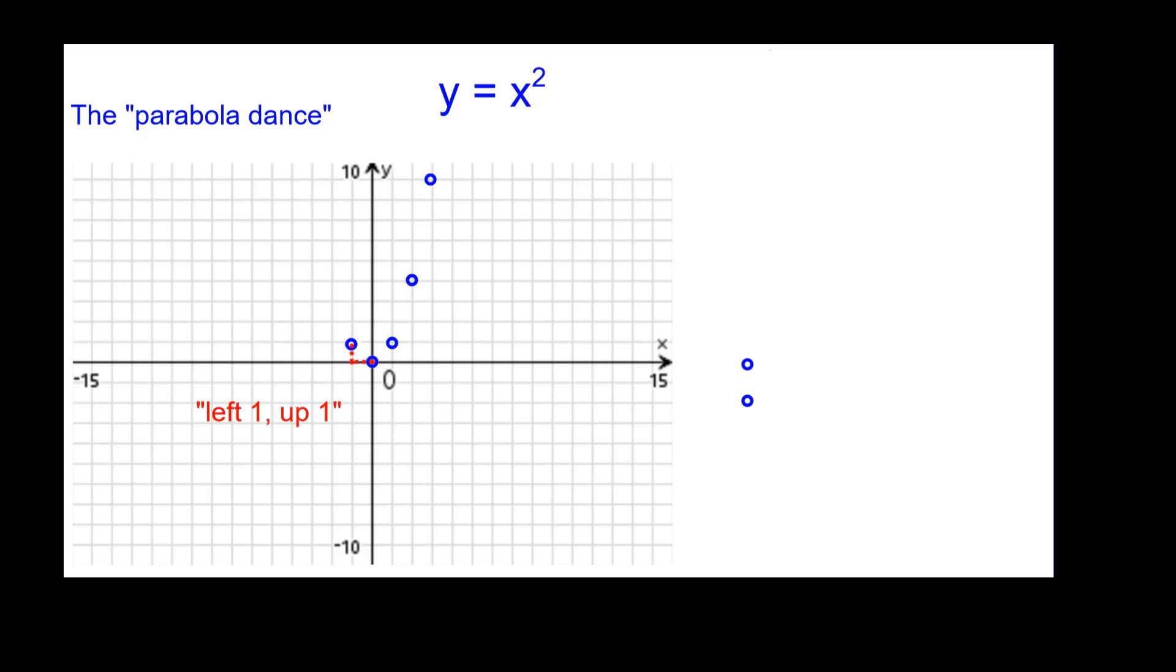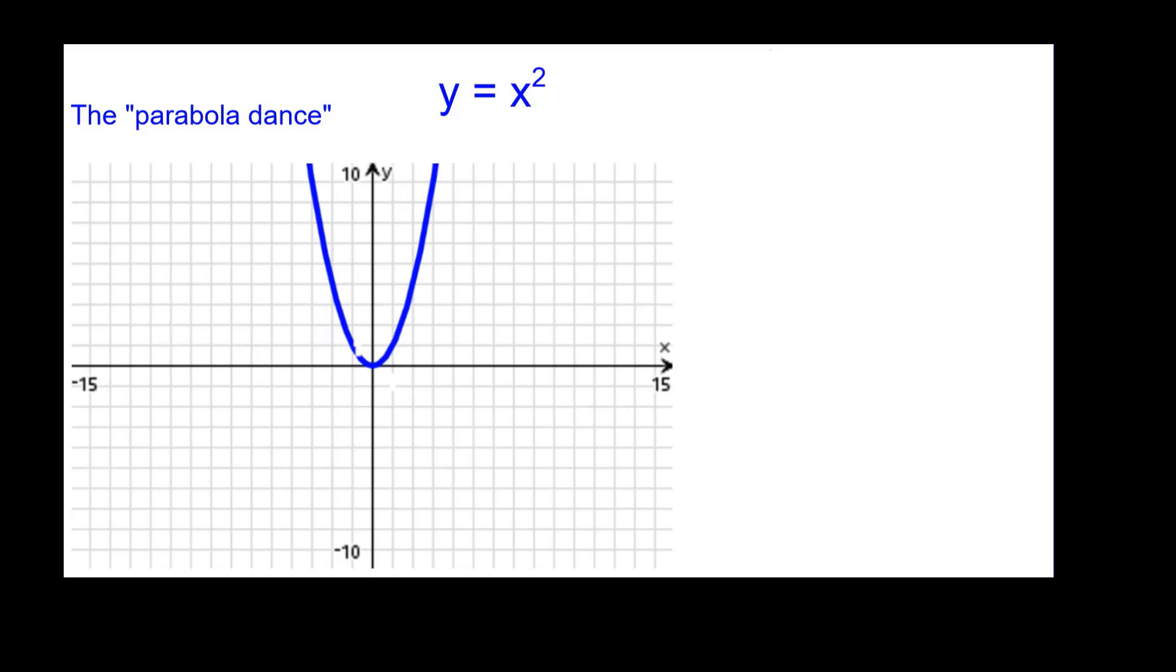On the other side, left 1 up 1. Negative 1, the quantity squared is 1. Negative 2, the quantity squared is 4. And the number negative 3 squared is 9. Connect the points. We'll get this beautiful looking parabola. Make sure it's more rounded along the bottom. Remember that one half and a quarter that we did before. And again, notice the symmetry about the y axis.